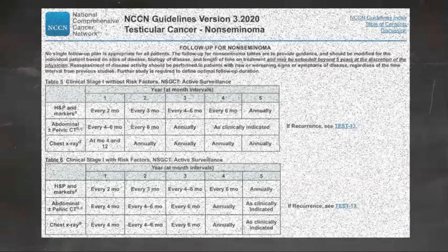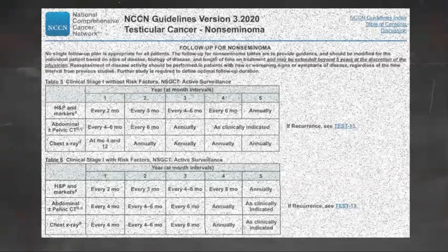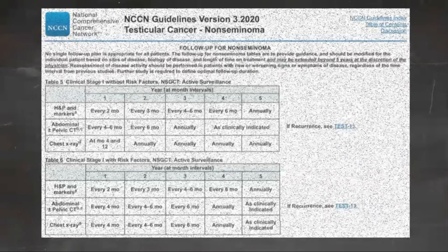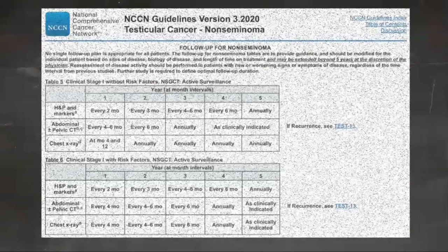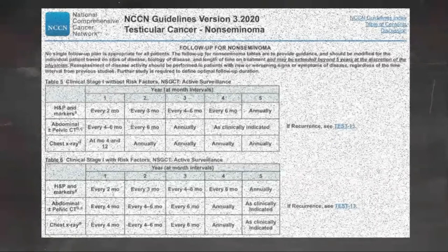Follow-up for non-seminoma stage 1 with risk factors: The long-term follow-up includes history and physical exam, serum tumor marker assessment, chest x-ray, and abdominal pelvic CT scan. In select circumstances, an MRI can be considered to replace an abdominal and pelvic CT. The MRI protocol should include visualization of the retroperitoneal and pelvic nodes in centers with experience. The same imaging modality should be used throughout surveillance. All imaging is performed with contrast. Chest x-ray may be used for routine follow-up, but chest CT with contrast is preferred in patients with thoracic symptoms.